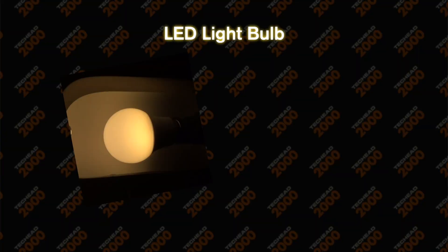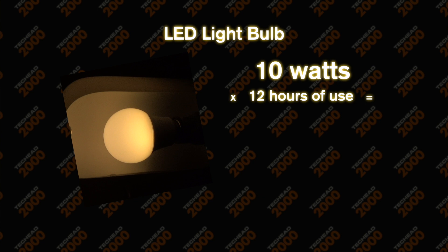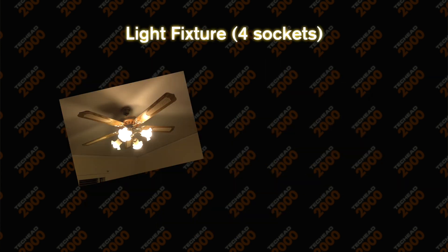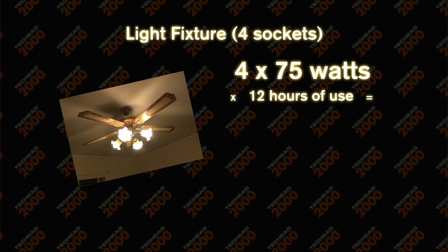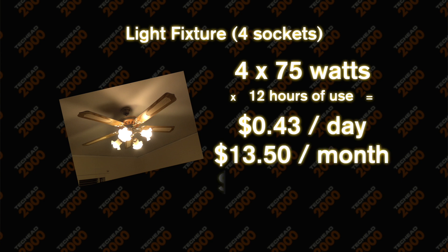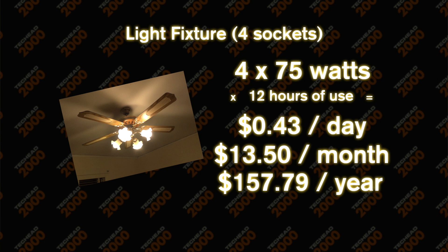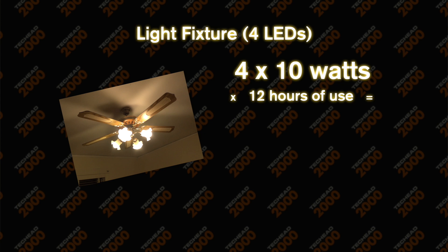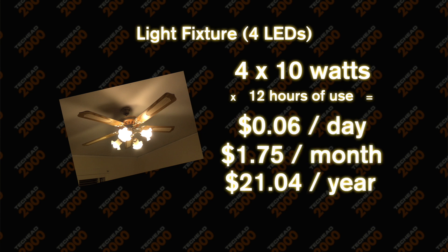LED light bulbs generally use 10 watts or less. Assuming one is on for 12 hours a day, it will cost you 1 cent per day, 10 cents per month, and $5.26 a year. This is a light fixture with four light bulbs in it. If it had four 75 watt incandescent bulbs on for 12 hours a day, it would cost 43 cents per day, $13.50 a month, and $157.79 per year. If you still have incandescent bulbs in your house, get rid of them immediately — an LED bulb will pay for itself pretty fast. Four LEDs running for 12 hours would cost 6 cents a day, $1.75 a month, and $21.04 per year.